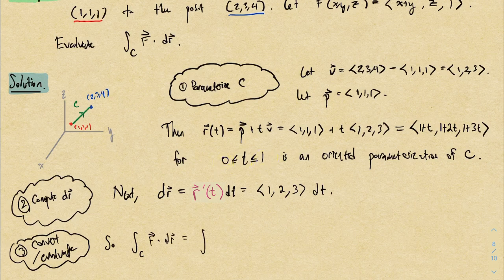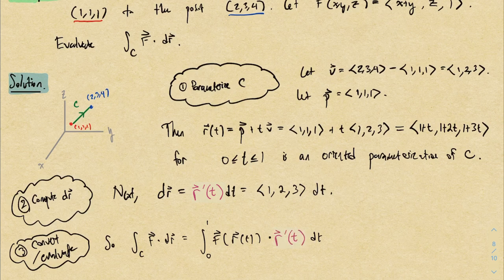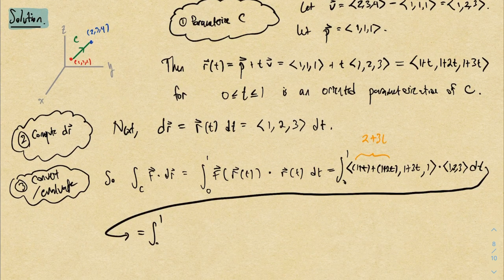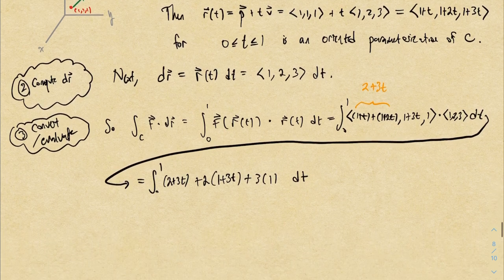The bounds go from 0 to 1 from our parameter domain. We evaluate the integral from 0 to 1 of F(r(t)) · r'(t) dt. F = (x+y, z, 1), and plugging in the parameterization: the first component is x+y = (1+t)+(1+2t), the second component is z = 1+3t, and the third is 1. We dot this with r' = (1,2,3), then simplify and integrate the resulting single-variable expression.